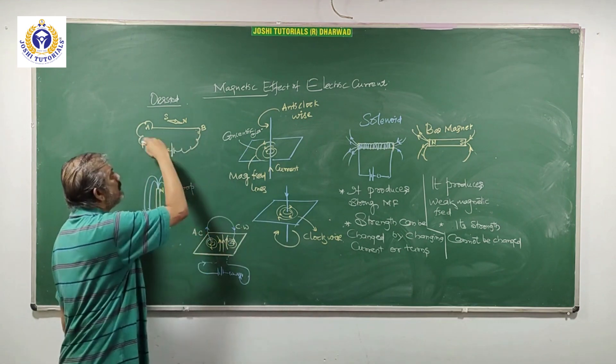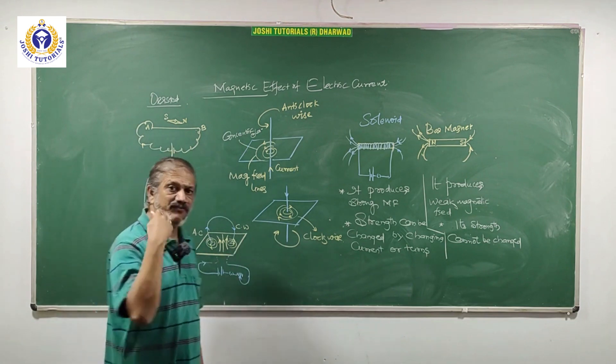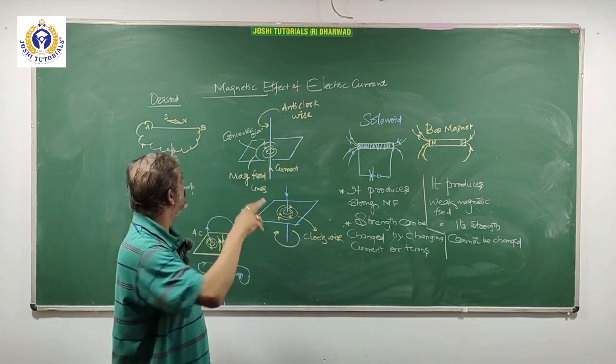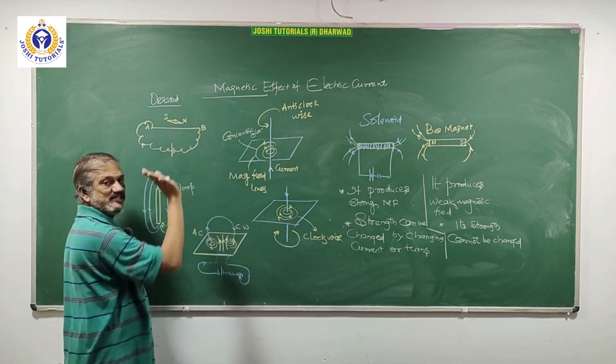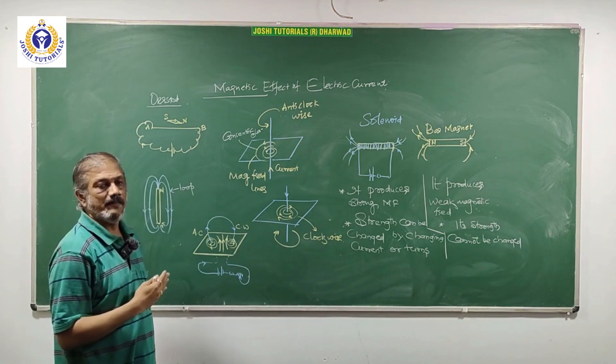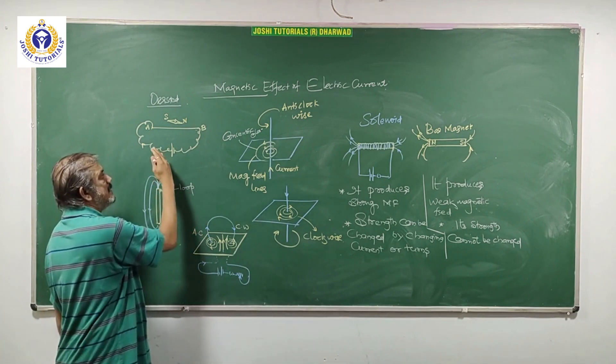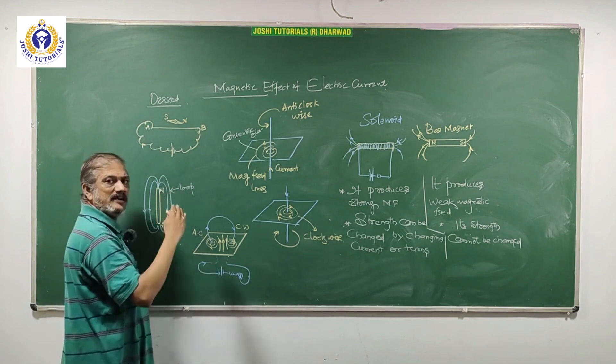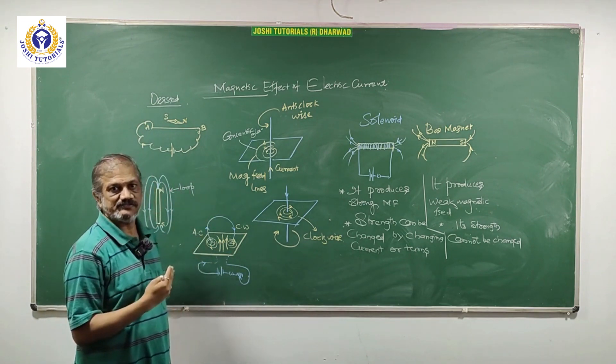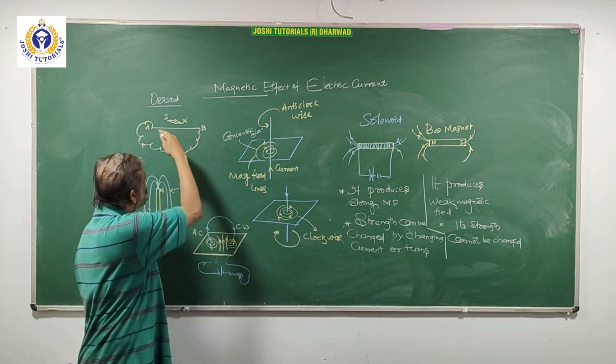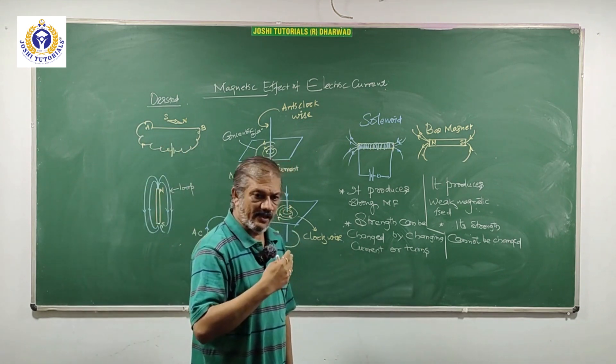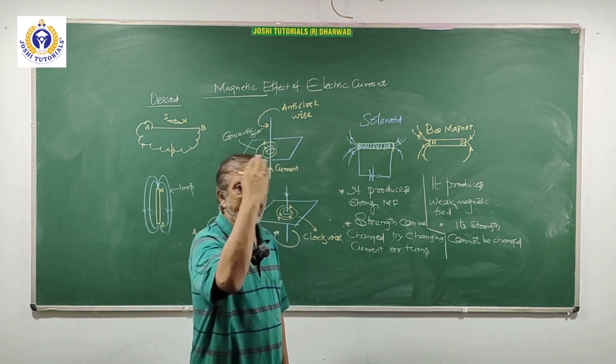That invisible field is developed through a conductor because it is carrying current. That field is called magnetic field or magnetic flux. Due to the magnetic field, it gets deflected. This is Oersted's information. It means electric current can be converted into mechanical energy. This concept further gave rise to many informations.